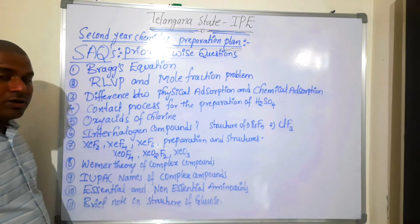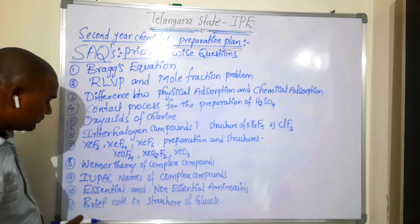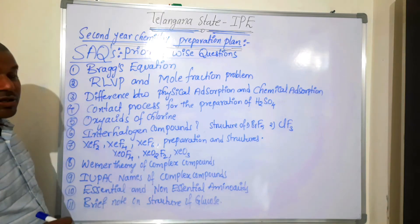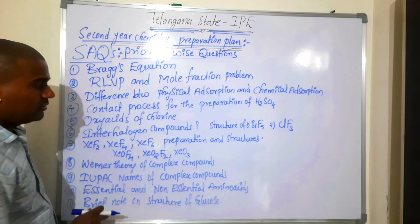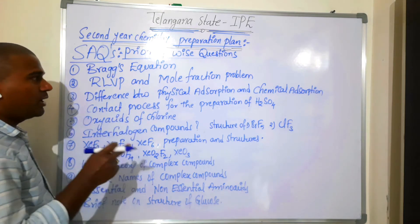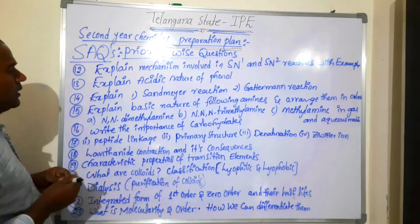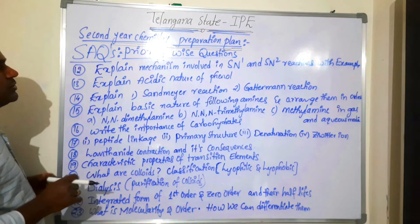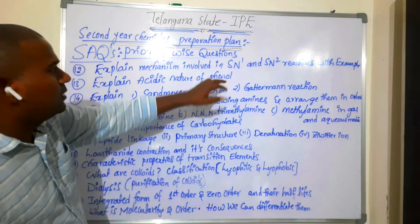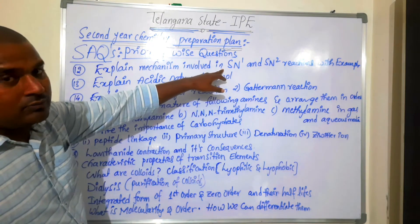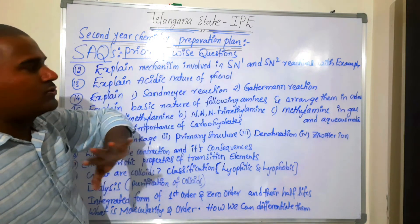What are essential and non-essential amino acids? — Biomolecules. Brief note on structure of glucose — also from biomolecules. If you read those chapters carefully, it will be easy to do. Question number 12: explain the mechanism involved in SN1 and SN2 reactions — from alkyl halide and aryl halide. SN1 and SN2 reactions will definitely come.